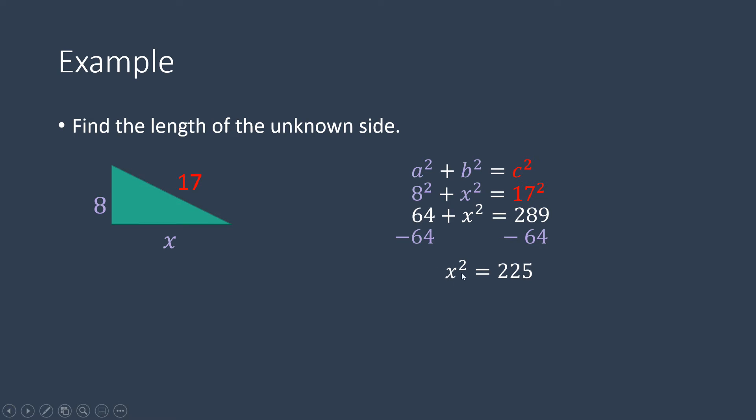Now you want to undo this square. So the opposite of squaring something is square rooting something. So you take the square root of both sides, and then this is where you would use your calculator. With the Windows calculator that I mentioned earlier, you would type in 225 first, and then the square root. And so that will give you x equals 15, and that's your answer.